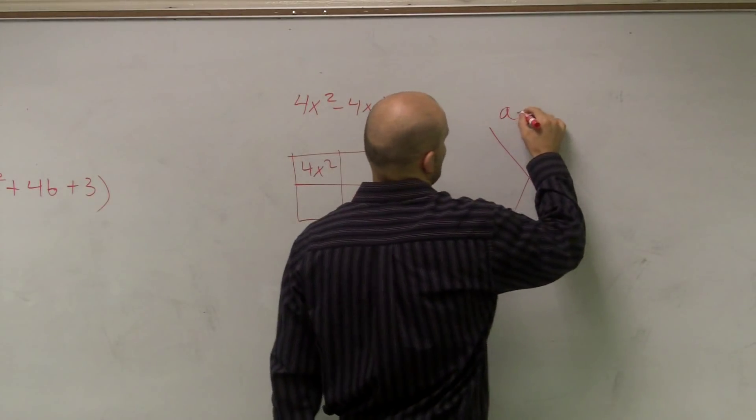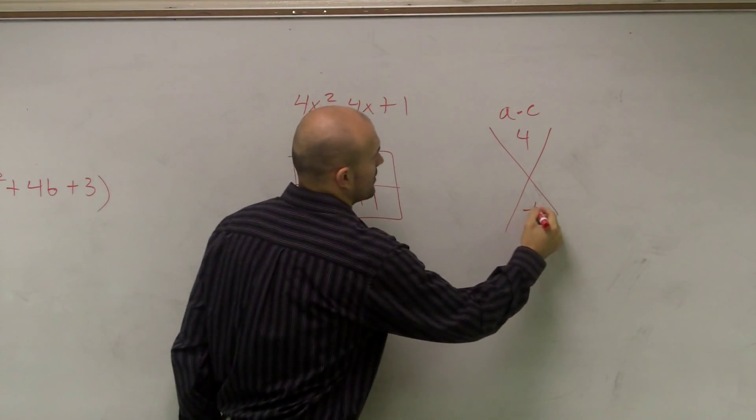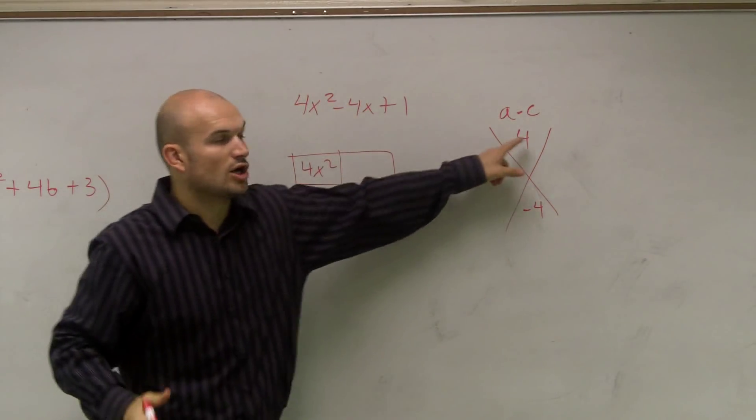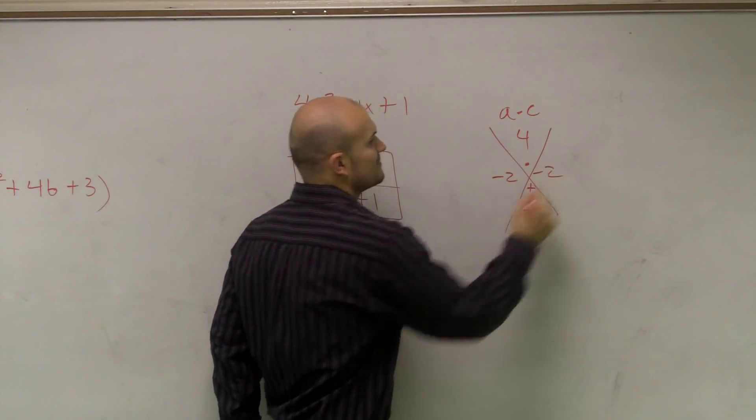4 times 1, right? We do a times c, which is 4. Then my middle number is negative 4. So I figure out what two numbers multiply to give me 4 and add to give me negative 4. Negative 2 and negative 2.